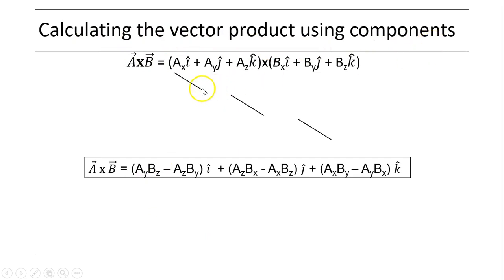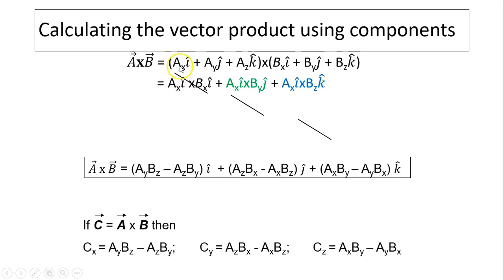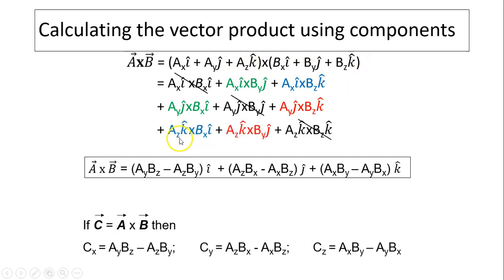To calculate the vector product using components, we use FOIL-like expansion on vectors a and b. This gives terms like ax·i cross bx·i, ax·i cross by·j, ax·i cross bz·k, and so forth for ay·j and az·k. Remember that parallel unit vector cross products are zero — i cross i, j cross j, k cross k all equal zero. Combining remaining terms: i cross j gives k, j cross i gives negative k; i cross k gives negative j, k cross i gives j; and so on. This simplifies to: if c equals a cross b, then cx equals ay·bz minus az·by.